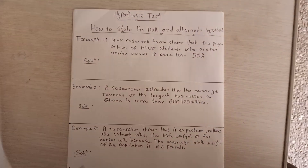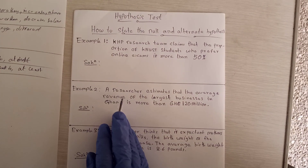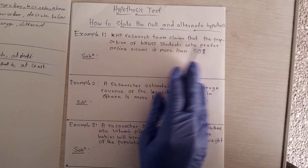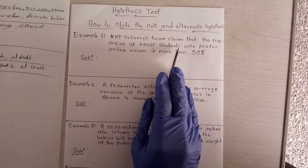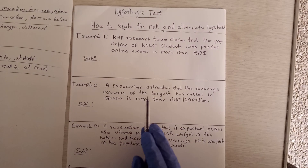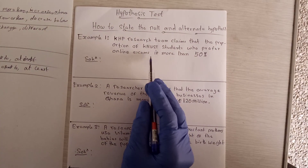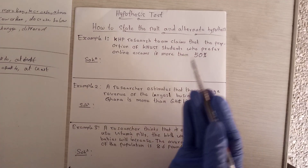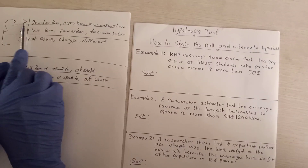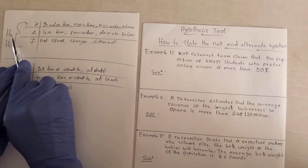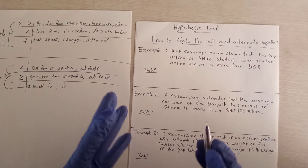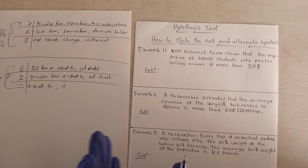Let's take Example 1: A KHP research team claims that the proportion of KNUST students who prefer online exams is more than 50 percent. 'More than' means greater than, and the greater-than sign goes with Ha. So this particular question is giving the claim as Ha or H1.